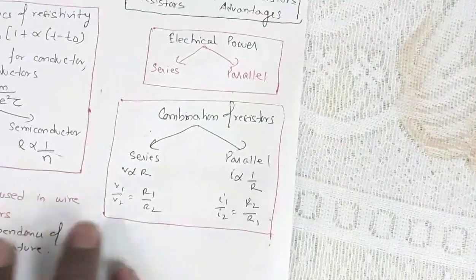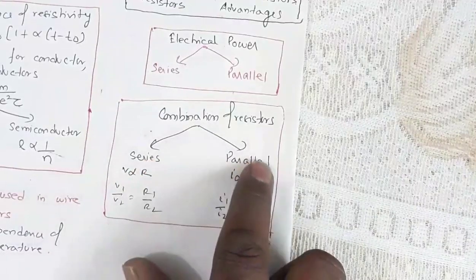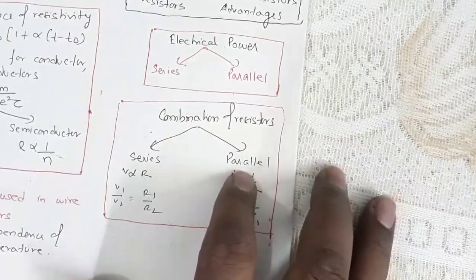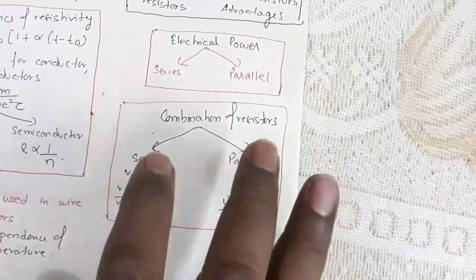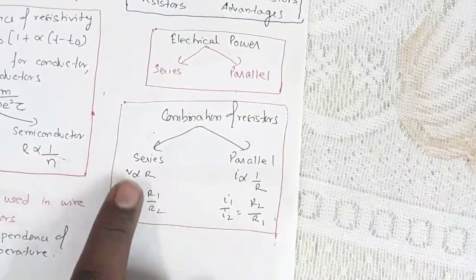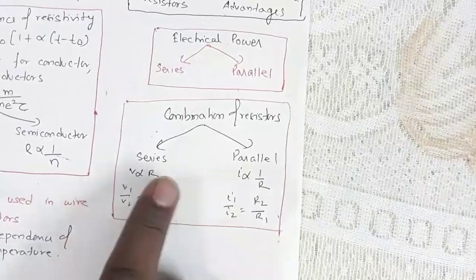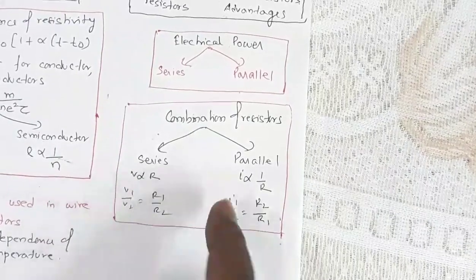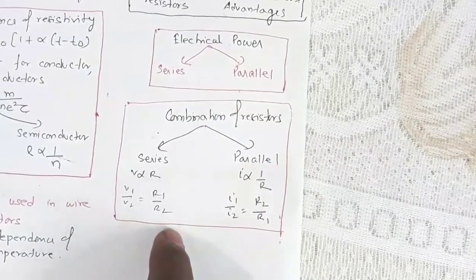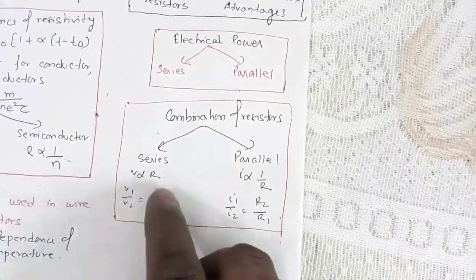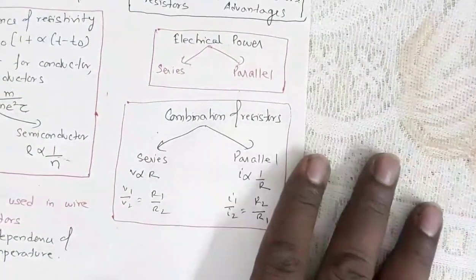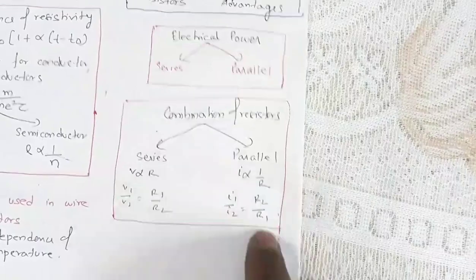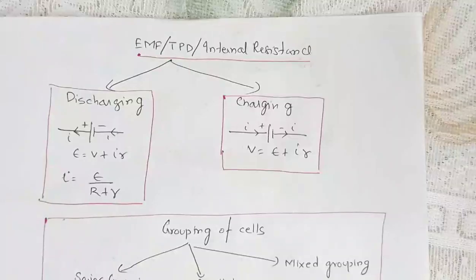In series combination of resistors, you already know how to find equivalent resistance. In series, current is the same; if resistors are different, potential will be different. Since current is same, V is proportional to R, so V1/V2 = R1/R2 — potential divides in ratio of resistances. In parallel combination, potential is the same, so current is inversely proportional to R — current divides in inverse ratio of resistance.